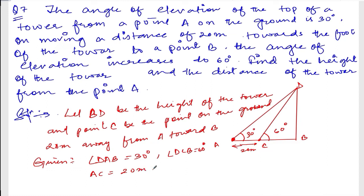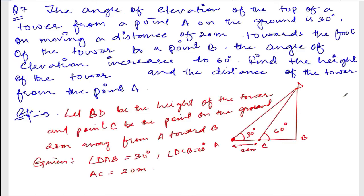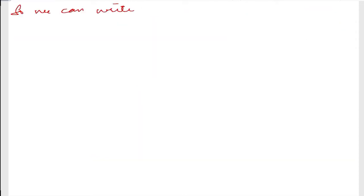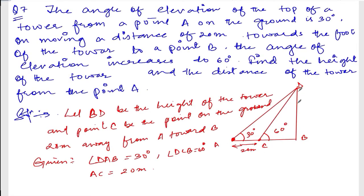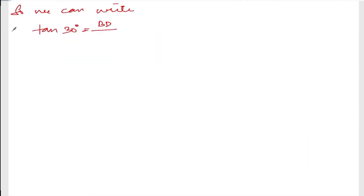We need to find out D B. So let us find tan of 30 degrees. We can write down: tan 30 degrees equals D B divided by A B. Tan 30 is 1 over root 3, which equals D B divided by A B.